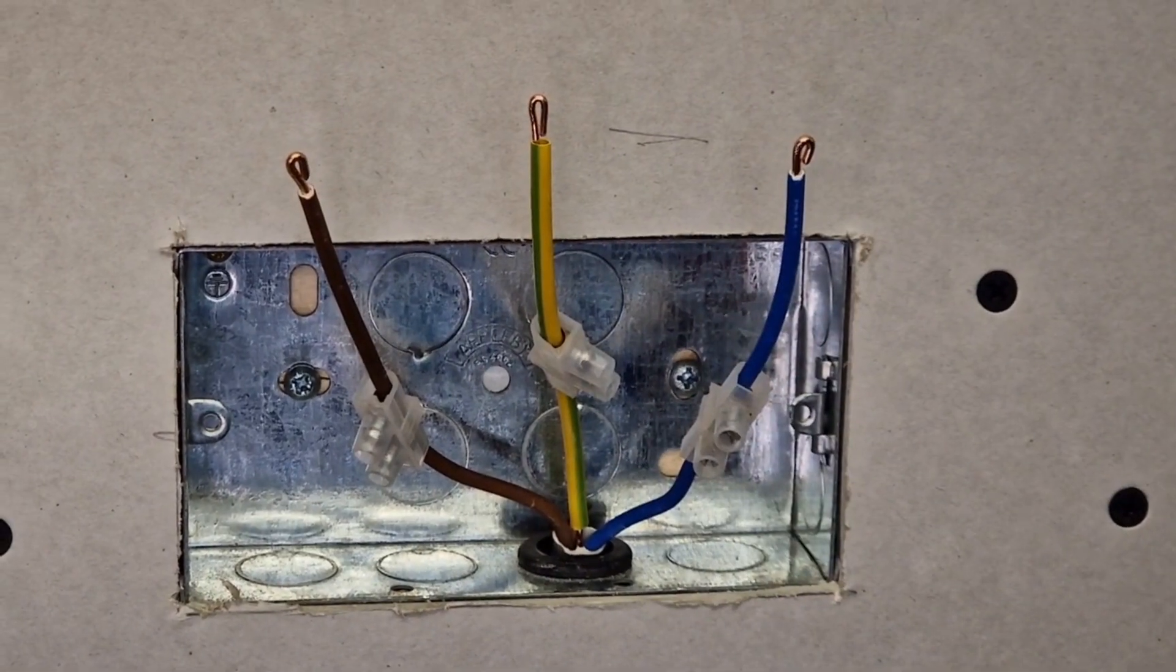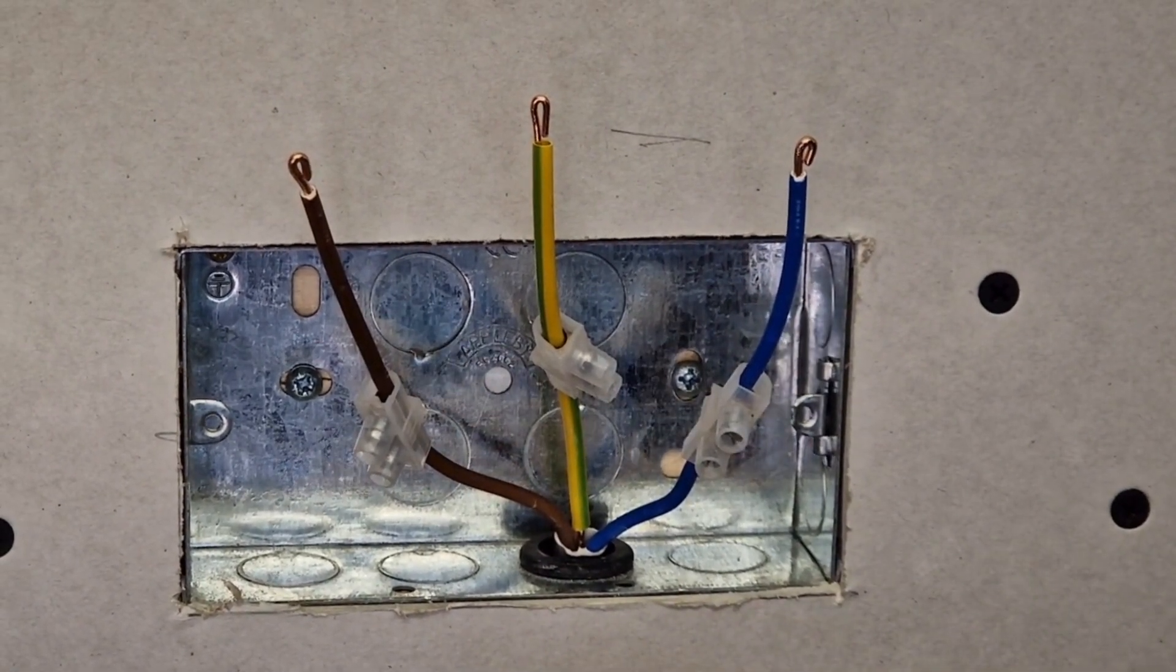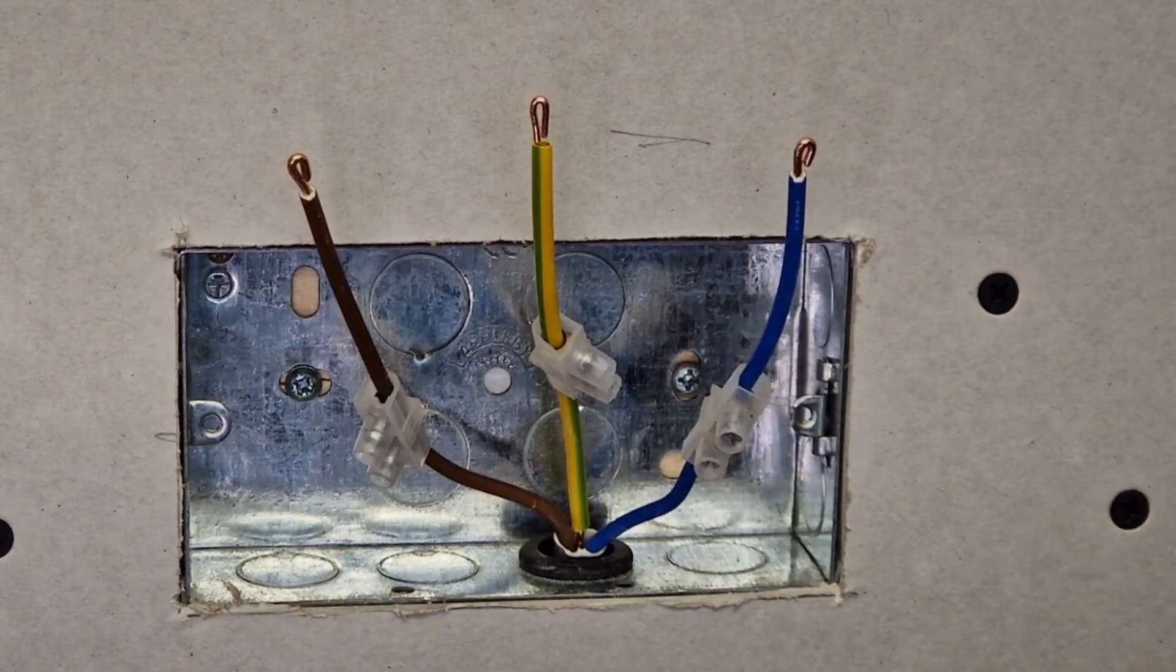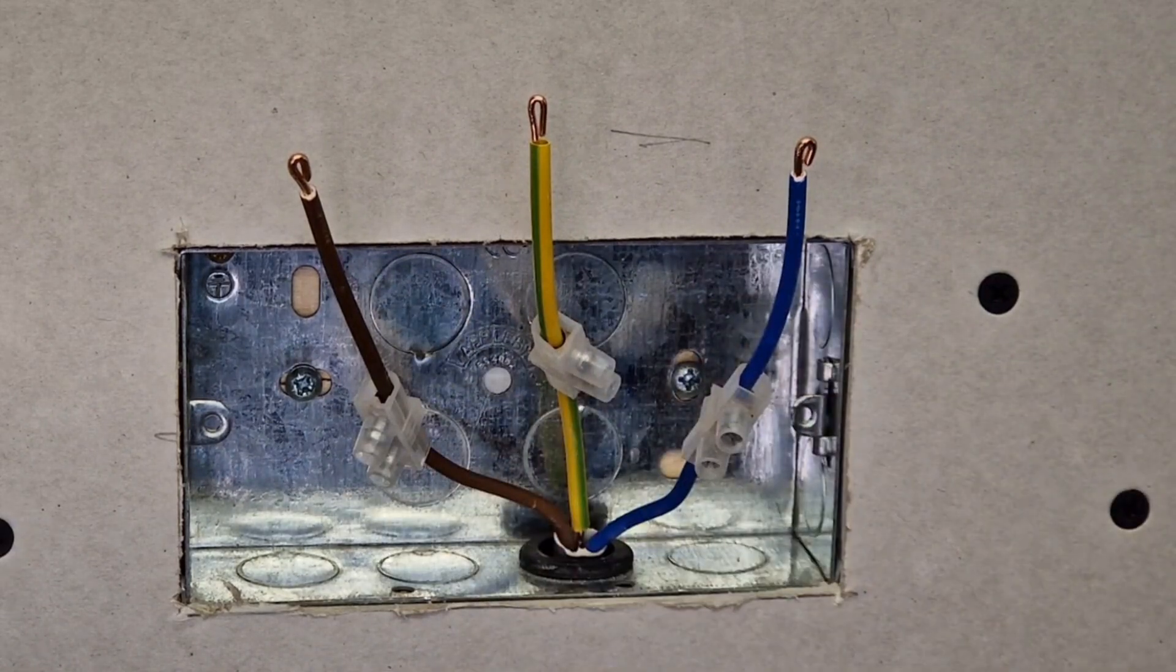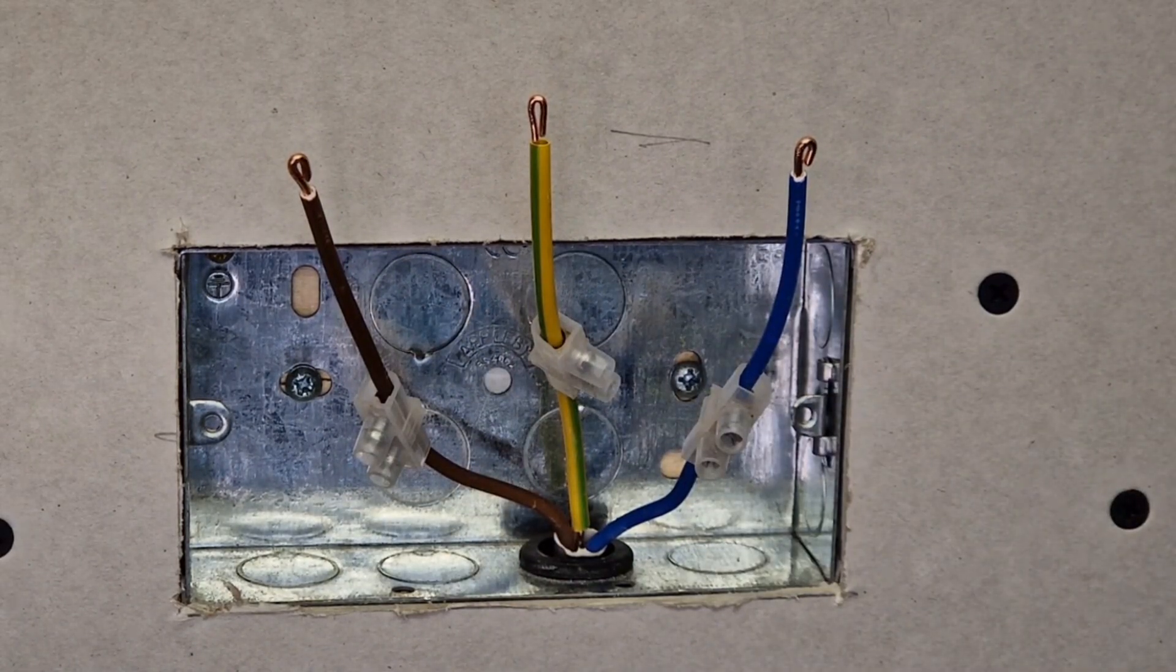So that's the conductors all doubled over ready for us to install the socket. We can put them into the socket, dress these connector blocks towards the back of the box and there's not a problem. However, there's a lot better method to do this.